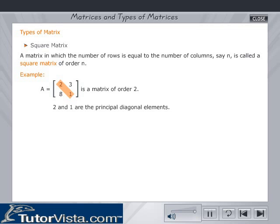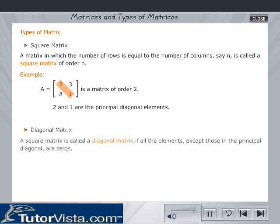2 and 1 are the principal diagonal elements. A square matrix is called a diagonal matrix if all the elements except those in the principal diagonal are zeros.